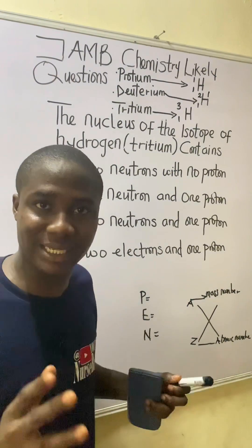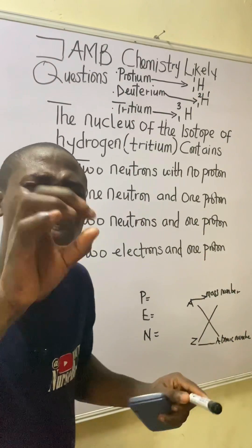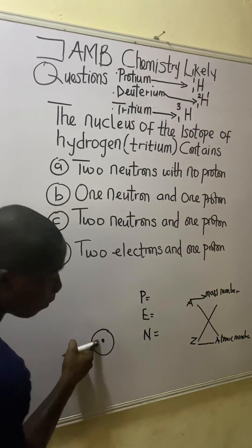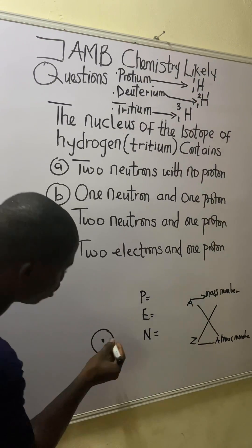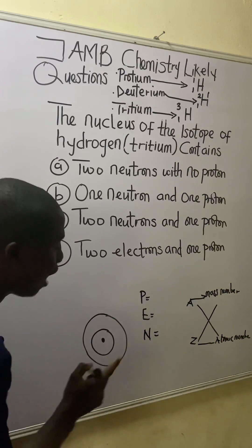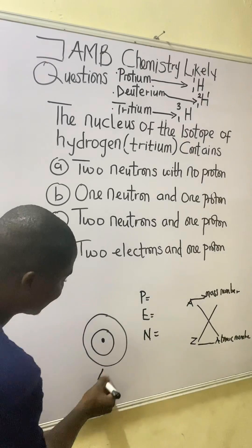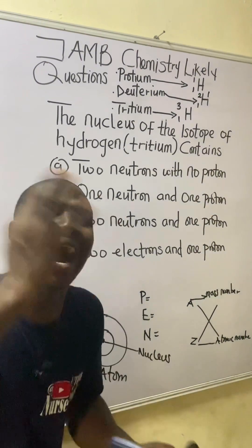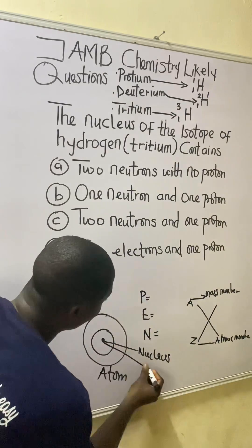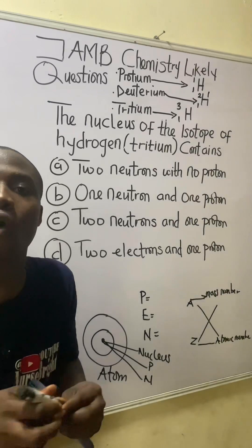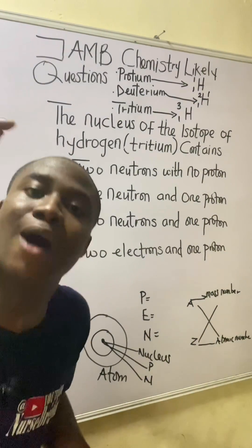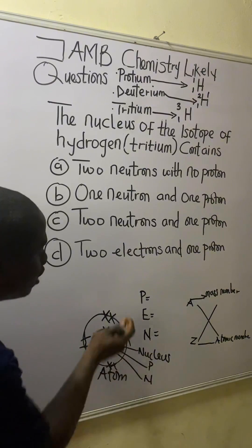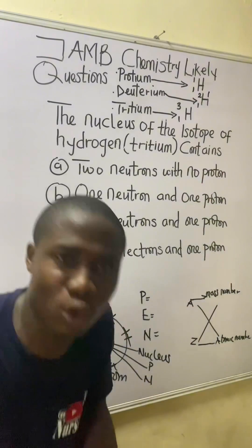To understand where these particles are found, consider the diagram of an atom. An atom has a centrally located nucleus and shells around it. Inside the nucleus, we have two important subatomic particles: protons and neutrons. Electrons revolve around the nucleus in the shells. So it is protons and neutrons that are found inside the nucleus — nothing else.